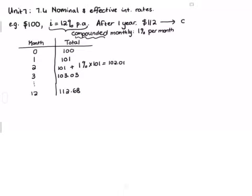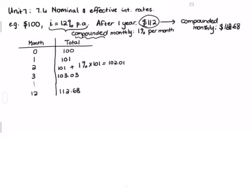Comparing the two: when compounded monthly, they still quote 12% per annum compounded monthly, but you get $112.68. Whereas if it is 12% per annum compounded yearly you would only have had $112. So if your compounding periods are more than one per year, you're actually going to get a little bit more.